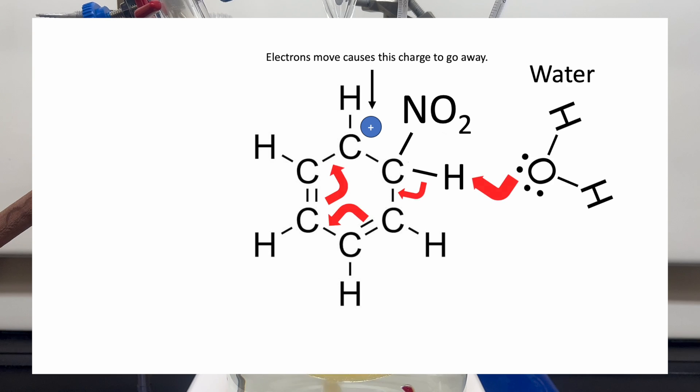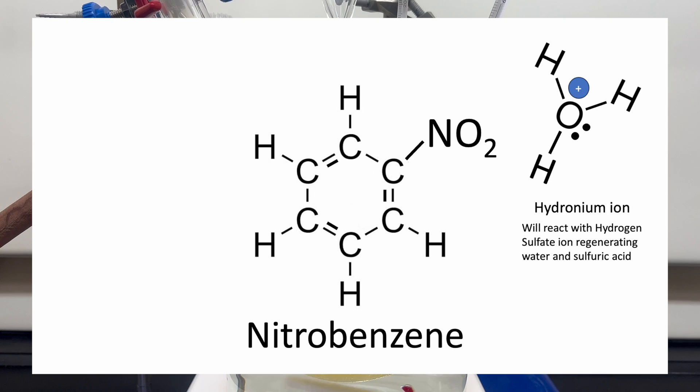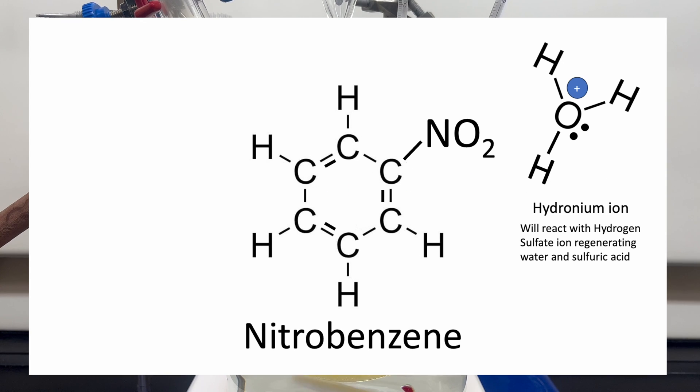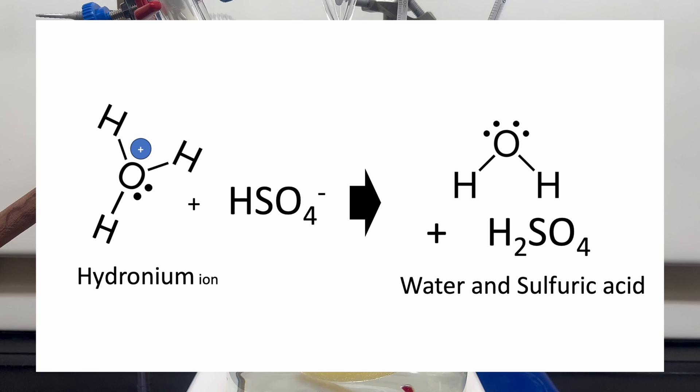The formed intermediate loses the hydrogen on the same carbon that the nitronium has bonded. The hydrogen is taken away by water forming a hydronium ion. The electrons that were bonded to the hydrogen then swing in, causing a bond to shift, getting rid of the carbocation in the process that was previously created. The final product of nitrobenzene is produced, along with a hydronium ion. The hydronium ion then regenerates the sulfuric acid, which was used to produce the nitronium ion originally. This also reverts the hydronium back to water.